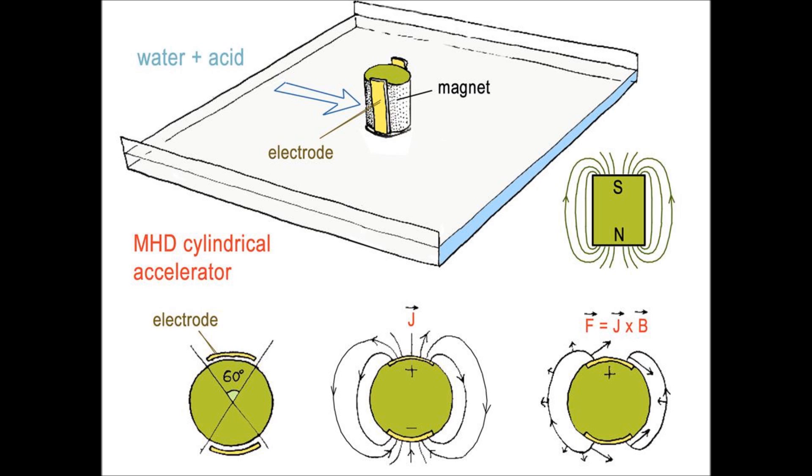Well, the principle of the cylindrical accelerator can be seen on the feature below. The cylinder is just a solid magnet with two electrodes. And these electrodes produce a discharge in water. And this current density, combined with the magnetic field, produce Lorentz force that tends to accelerate the fluid.